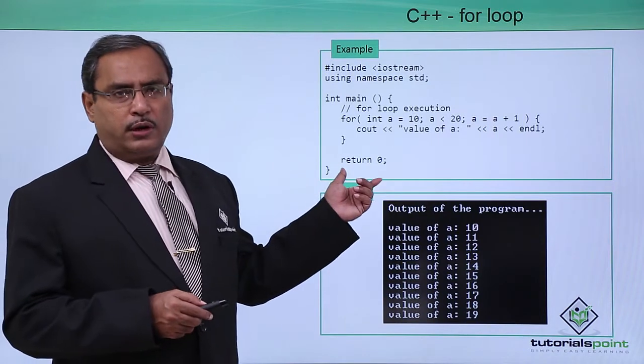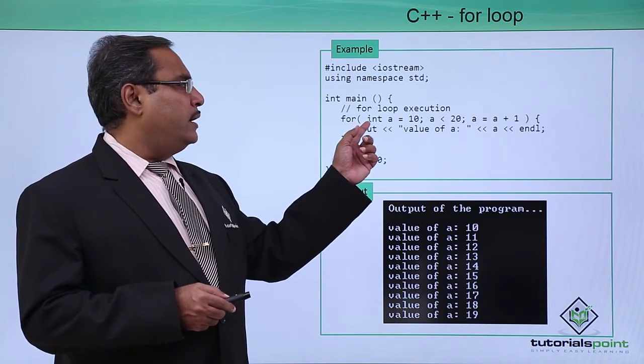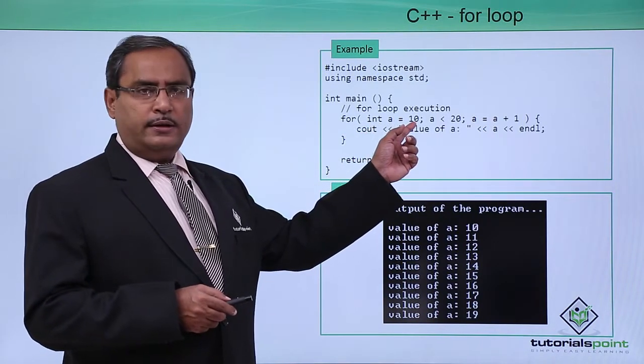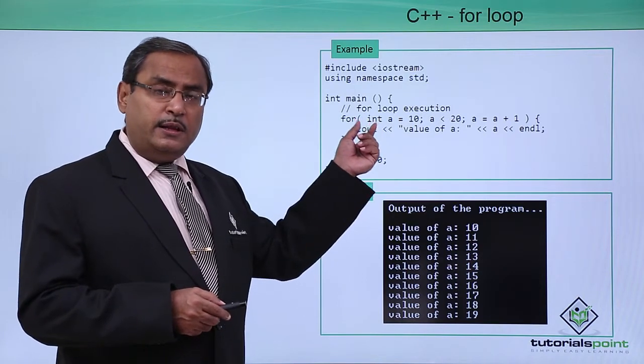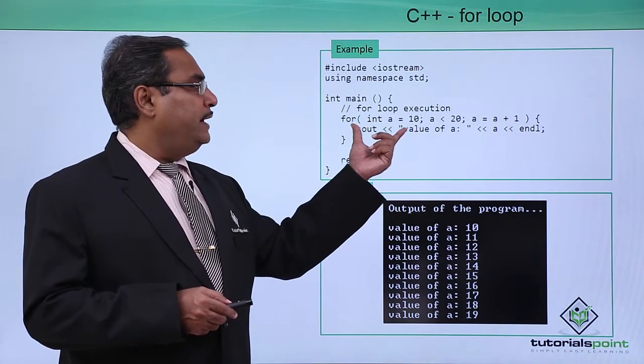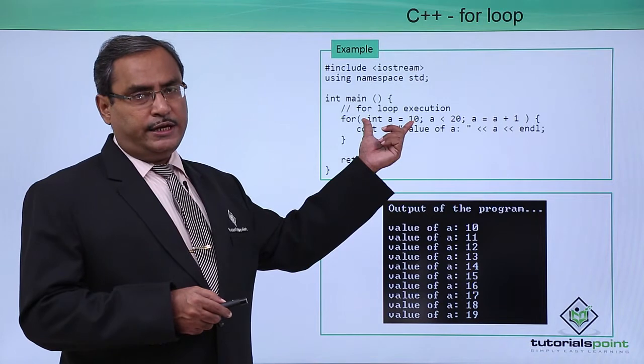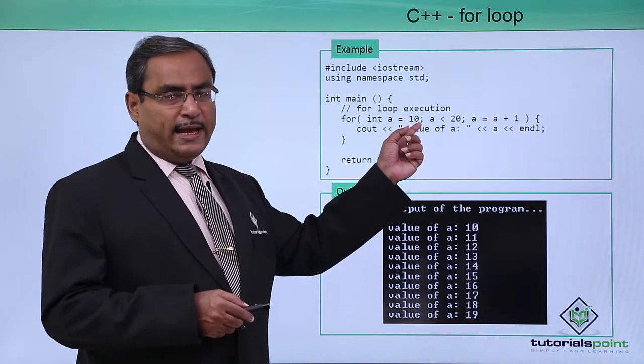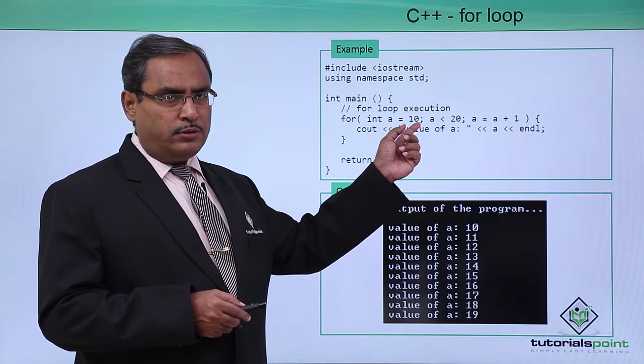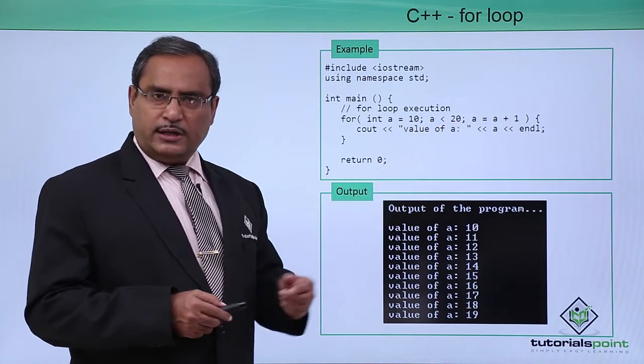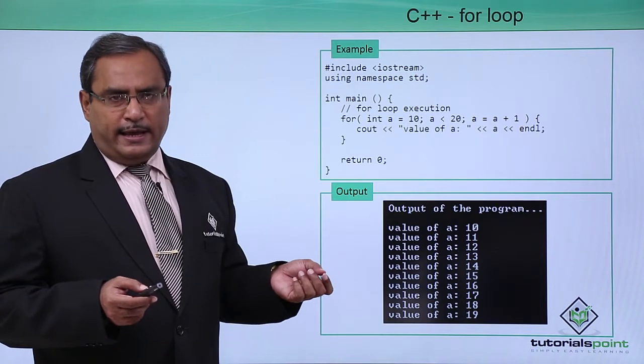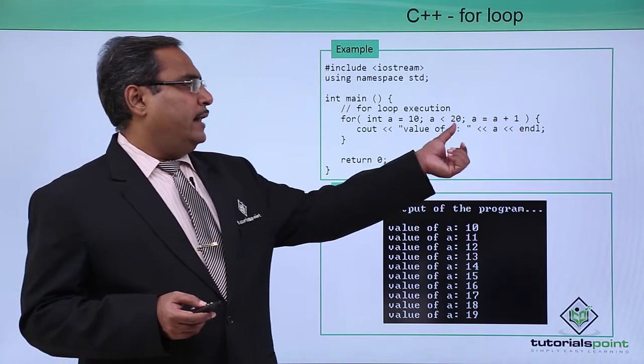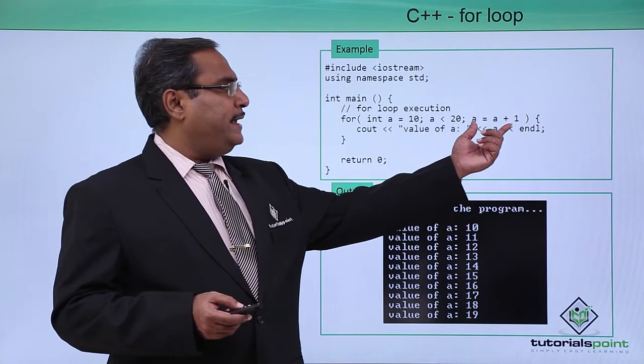Here is the sample code for us. Here we have done int a = 10. We have defined the variable and also initialized it in the init statement. For int a = 10, semicolon as we mentioned earlier will be there, then the condition has to be written: a less than 20. Then semicolon again.